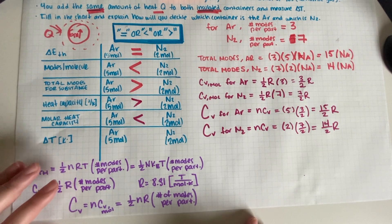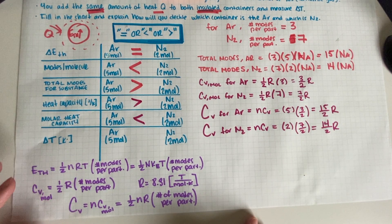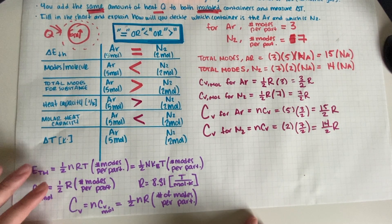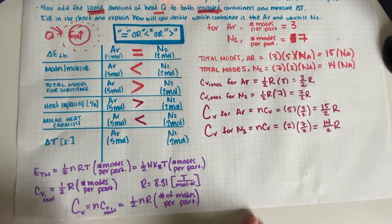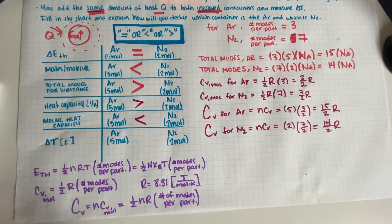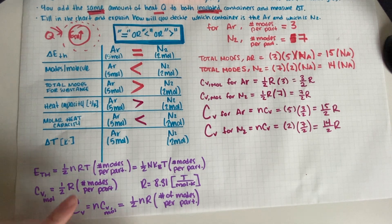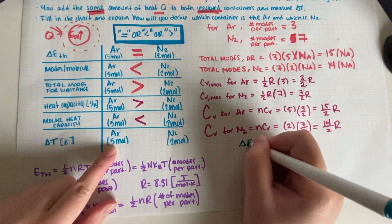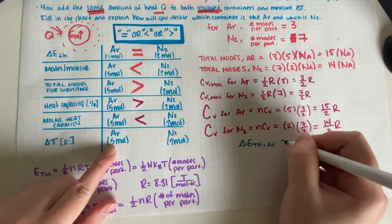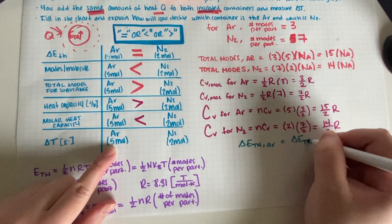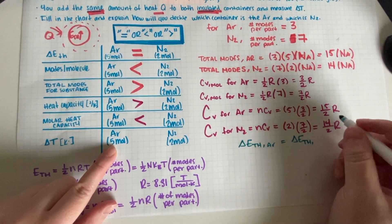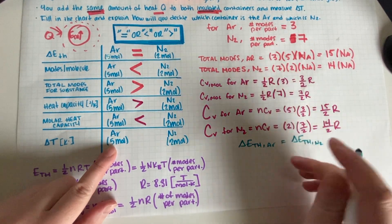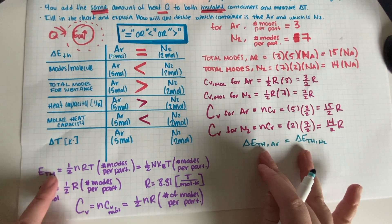Okay, so now temperature change. Temperature change is actually easy because both thermals are exactly the same. So change in E-thermal for Ar equals change in E-thermal for N2. So I just substitute my equation over here.